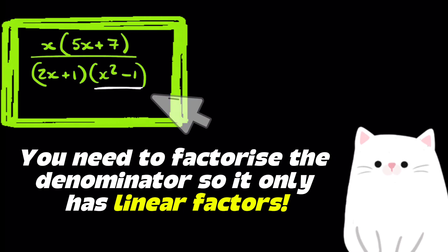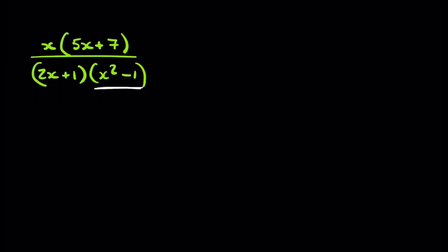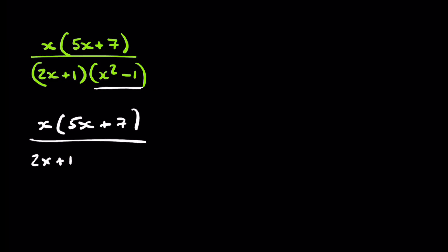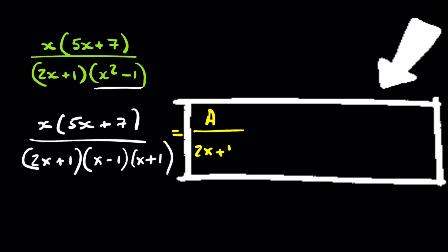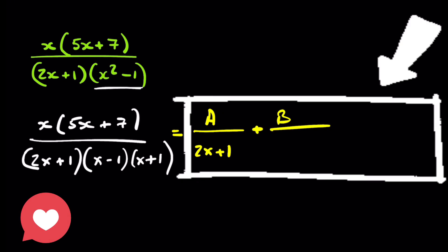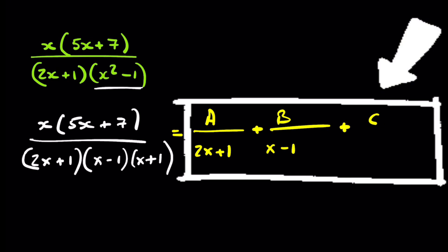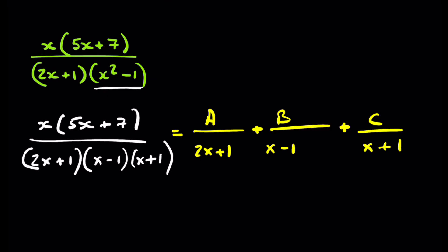Looking at the second question, there's a slight issue with the second parenthesis: x²−1. This might not always be factorisable, but in this question it is. Because they are linear factors, this is still Type 1. We can write the expression in the form A/(2x+1) + B/(x−1) + C/(x+1). These have to be linear factors; otherwise this technique won't work.